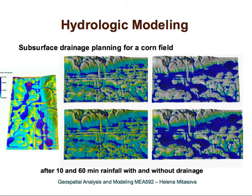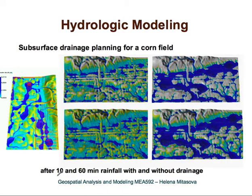This is a very different type of hydrologic modeling application — to support subsurface drainage planning for a cornfield. Here we have a cornfield and the red lines represent subsurface drainage that should ensure water is not standing in the field for more than 48 hours. We simulated surface water depth after 10 minutes, then after 60 minutes of rainfall. The upper image shows the field with drainage and the lower image shows it without drainage — there is much more water in the undrained field, but even with drainage it will still get flooded quite a bit during the storm.